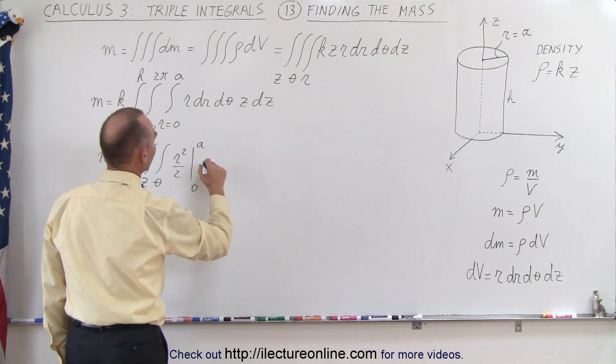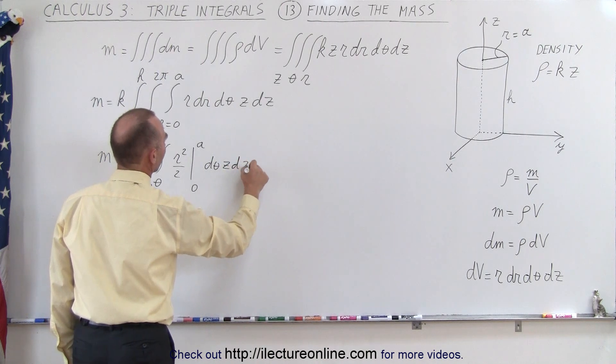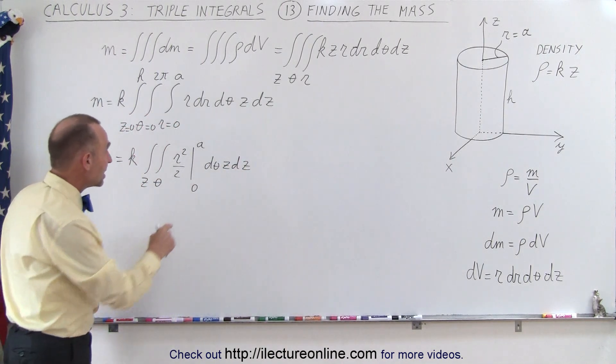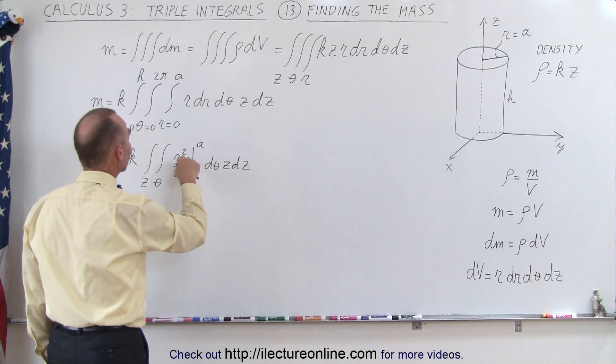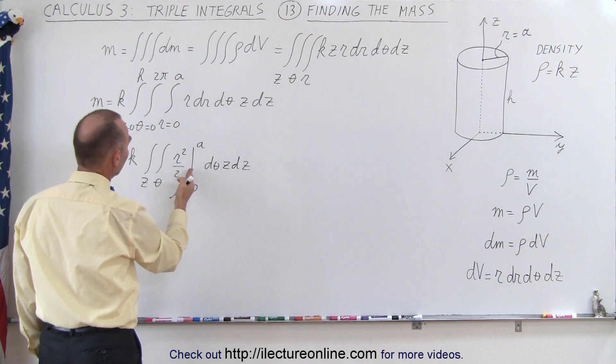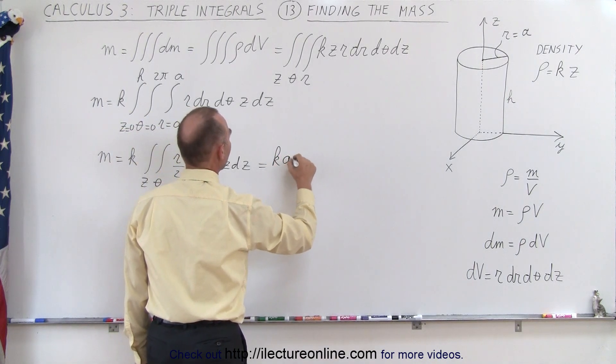And then we still have dθ and z dz left. When we put in the limits of integration, plug in 0 we get nothing, plug in a we get a squared over 2, which is a constant that can come outside the integral sign. So we have k a squared over 2.